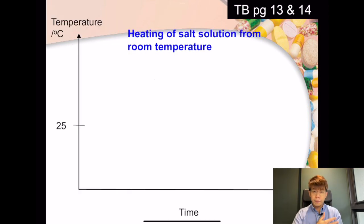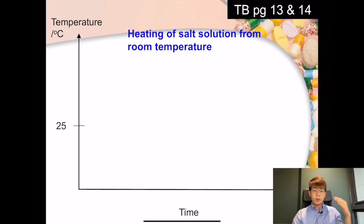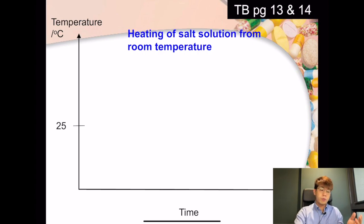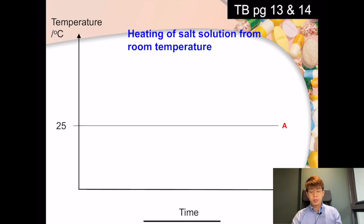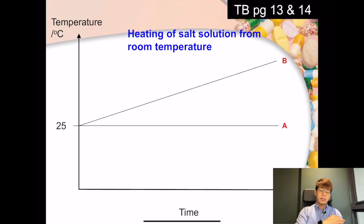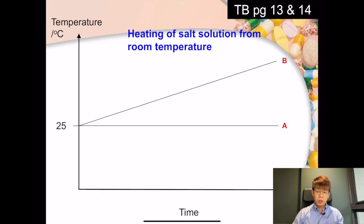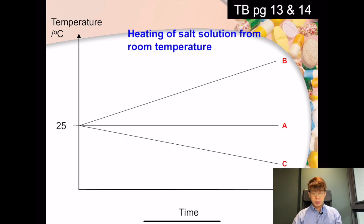How do you think the temperature graph will look when heating a salt solution? On the x-axis is time and on the y-axis is temperature. Does it look like option A — temperature remains constant at 25°C? Option B — temperature increases continuously as heating continues? Or option C — temperature continuously decreases?